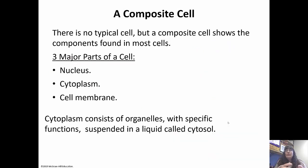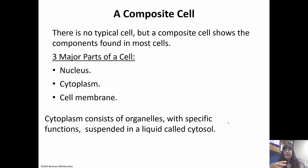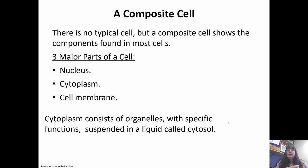There isn't really a typical cell, but there are three major parts that all eukaryotic cells have in common. The three major parts are the nucleus, which is the control center — think of it as the boss. Then you have the cytoplasm, which suspends all of the organelles. And then we have the cell membrane, which surrounds the cell. The cytoplasm itself has a liquid component called cytosol, and the organelles are suspended in it. So the cytoplasm is made up of the organelles and the cytosol — don't get those two terms confused.